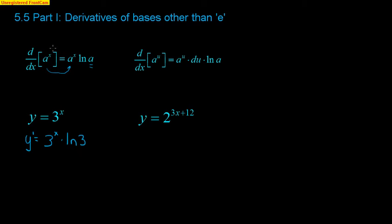We always know that the exponent is rarely going to be just x. When we have the derivative of a to the u, we write the exact same thing, and then we take the derivative of the exponent — that's what du is — times the natural log of the base again.